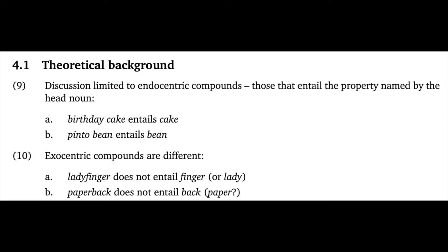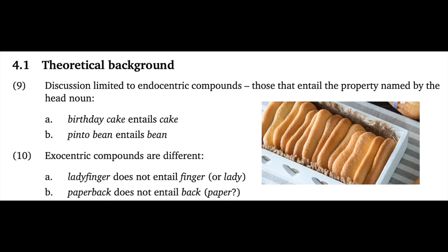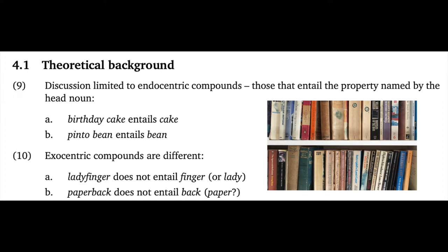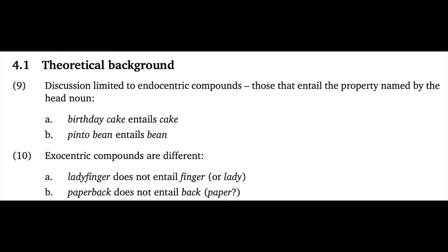For a point of contrast, we can consider the exocentric compounds in example 10. A ladyfinger is a particular kind of cake-like dessert treat — it's not a finger, although they're sort of shaped like fingers, nor is it a lady. Similarly, a paperback is not a kind of back; a paperback is a book. For both of these exocentric compounds, it's notable that we write them as single words, and the fundamental observation is that we just can't tell what they might refer to from looking at them. So from here on out, we're going to set aside the exocentric compounds entirely — maybe they're just memorized lexical items for which we wouldn't expect much systematicity.